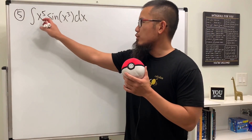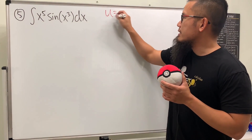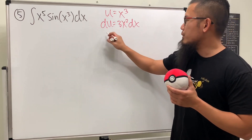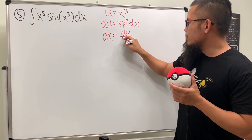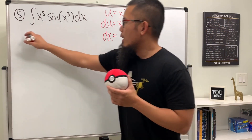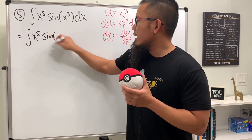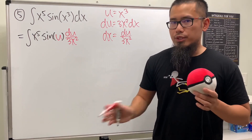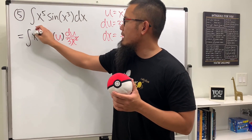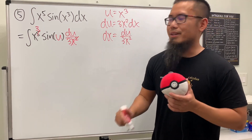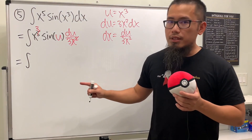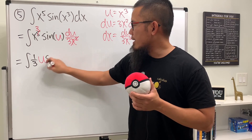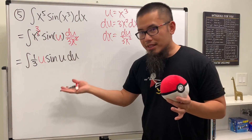For number five, we have the integral of x to the fifth power times sine of x to the third power. Let's do a u-sub first. Let u equal x to the third power. Then du is equal to 3x squared dx, so dx equals du over 3x squared. Take this integral to the u world: we have x to the fifth power times sine u times du over 3x squared. We can cancel x squared, and we're left with x to the third power which is exactly our u. So we have one third times the integral of u times sine u du.